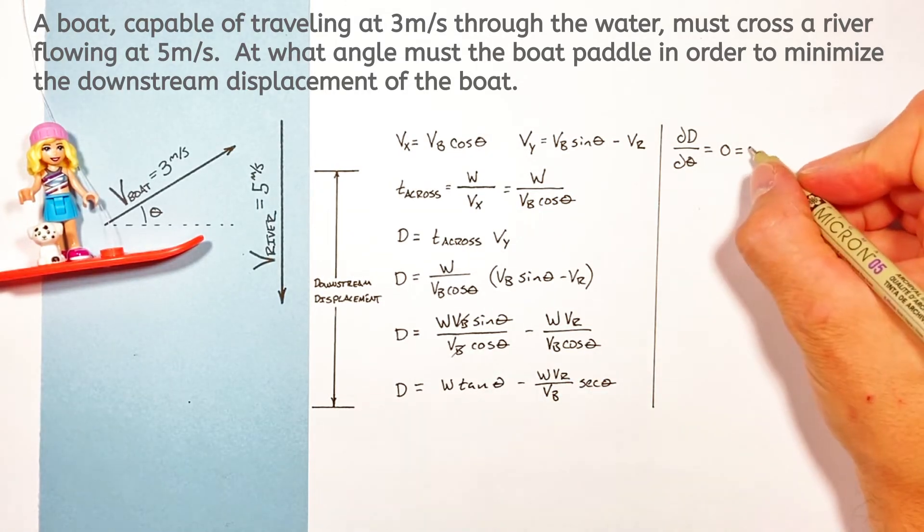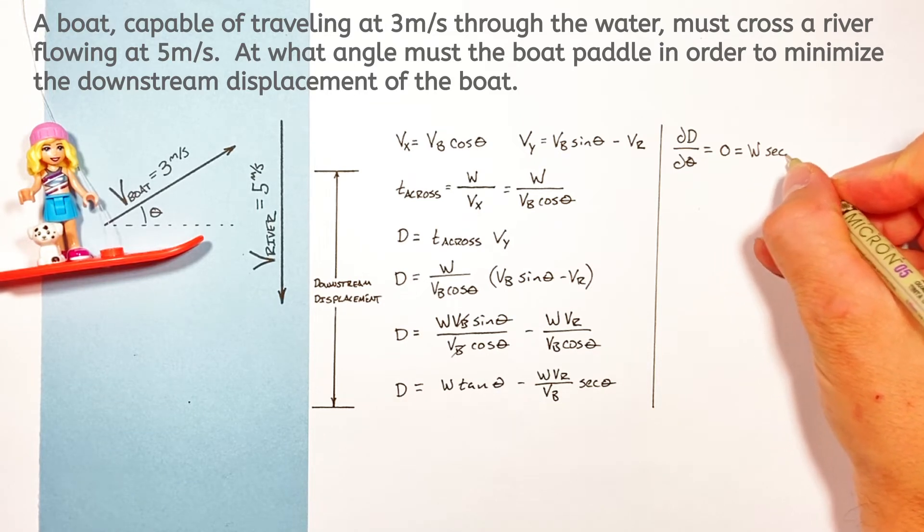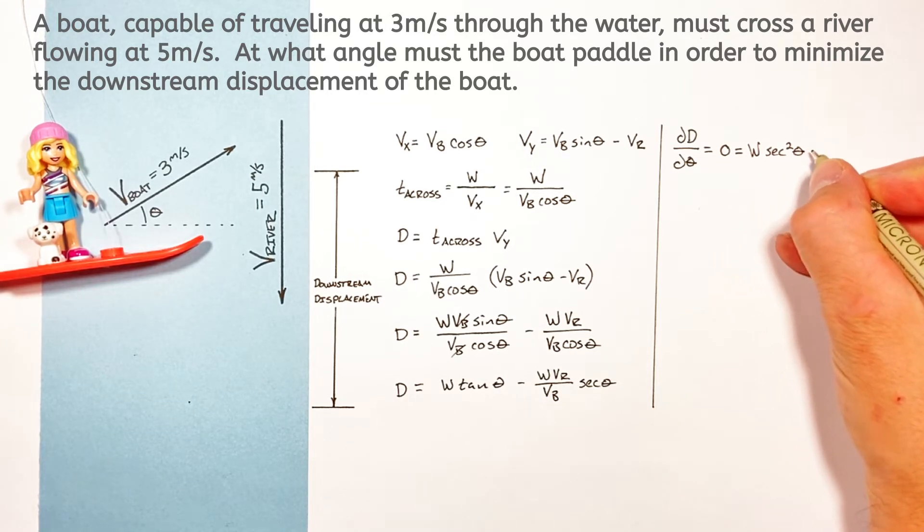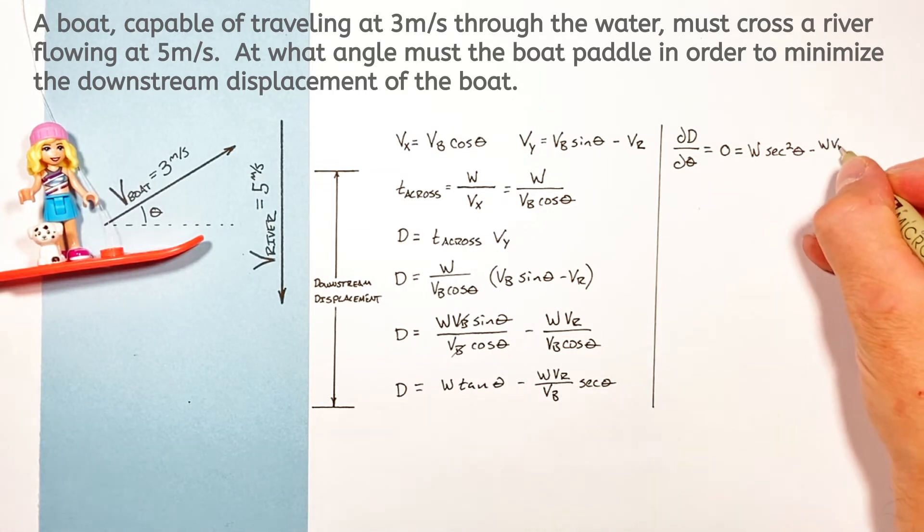So the derivative of this first term is going to be W times the derivative of tangent that's secant squared theta minus the derivative of our next term where we have a bunch of constants times the derivative of secant which is secant theta tangent theta.